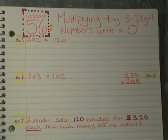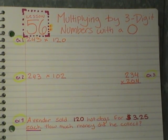Alright, tonight's lesson is lesson 56, and we are multiplying by three digit numbers like we did in the last lesson, but this time we're going to have a zero in our problem. I'm going to show you kind of what to do when that happens.